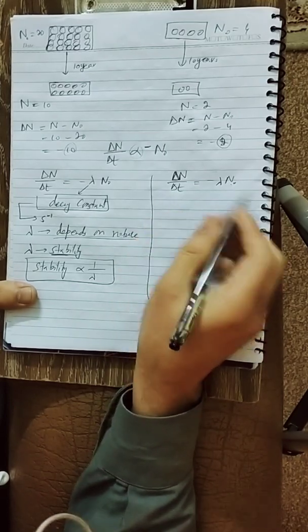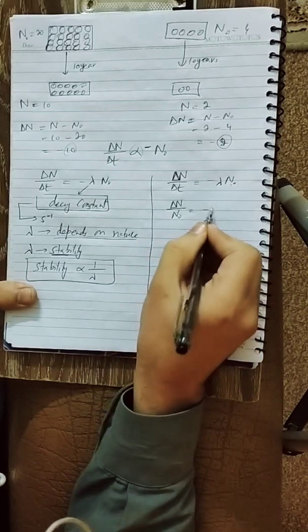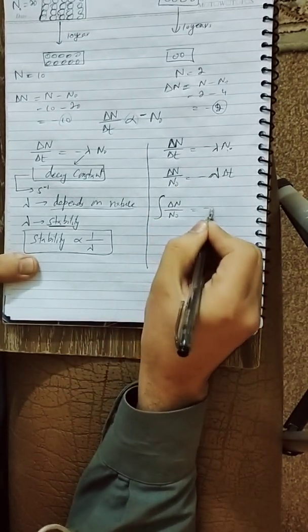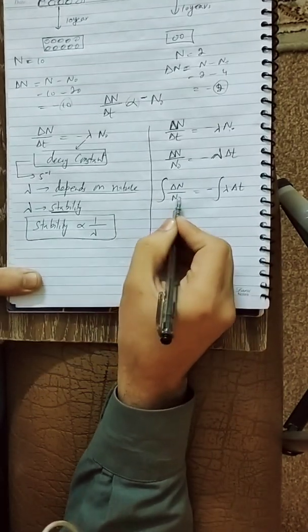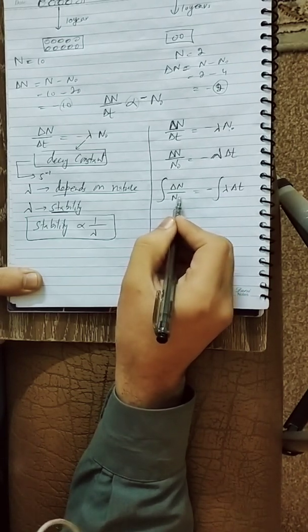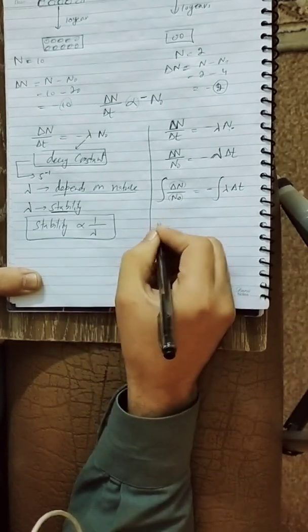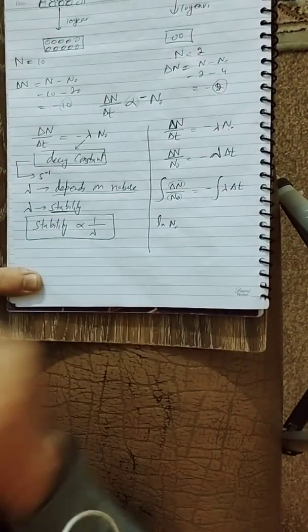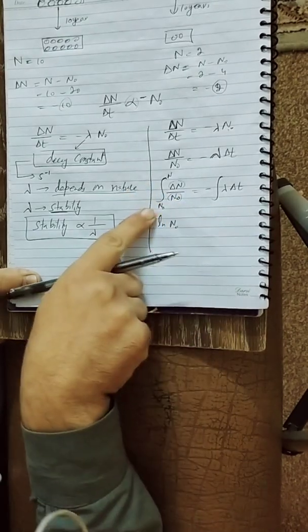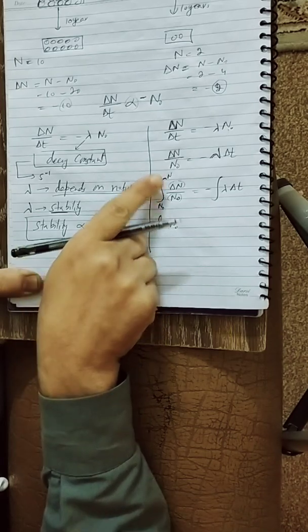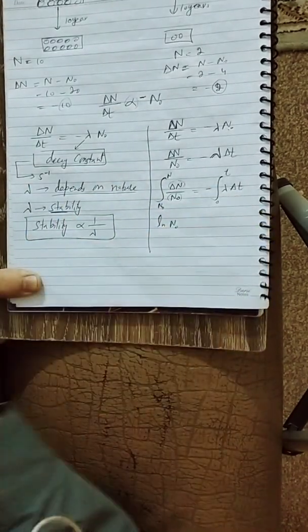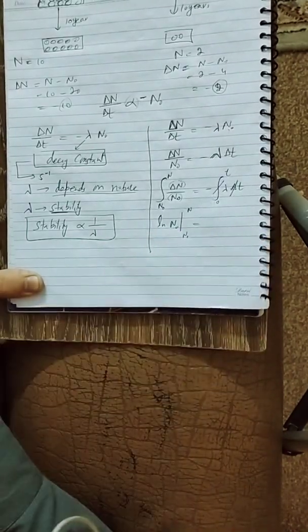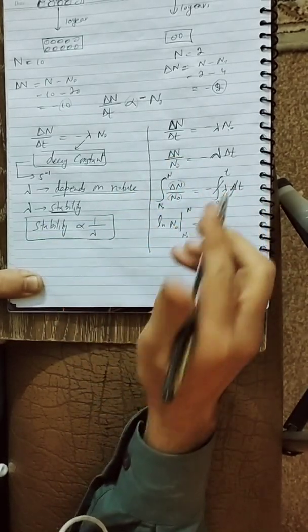Dividing N₀ on both sides and multiplying Δt on both sides gives ΔN/N₀ = −λΔt. Taking integration on both sides, we apply the rule that if a function has its derivative in the numerator, we take the natural log of that term. The limits go from N₀ to N for nuclei, and from 0 to t for time.